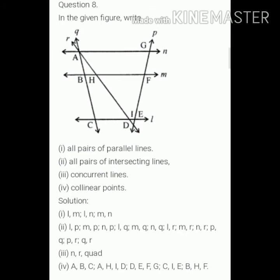Third part is concurrent lines. Means A is a point through which lines pass. So here we will take A and the lines are R and N.